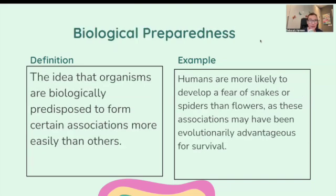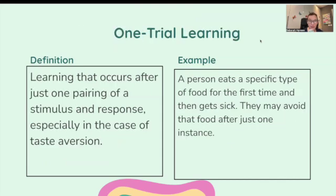Biological preparedness: the idea that organisms are biologically predisposed to form certain associations more easily than others. Humans are more likely to develop a fear of snakes or spiders than flowers, as these associations may have been evolutionarily dangerous for survival. One trial learning: learning that occurs after just one pairing of a stimulus and response, especially in the case of taste aversion. A person eats a specific food for the first time, gets sick, and may avoid that food after just one instance.